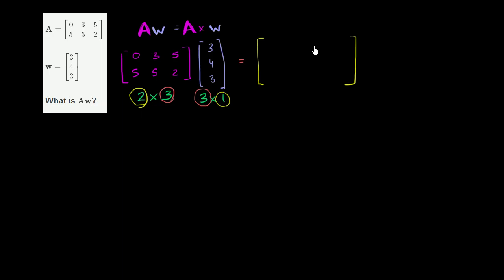So the top entry right over here, we're going to get the row information from our first matrix. And then the column information - there's only one column here. But we're going to get that from this matrix, or this vector, whatever you want to call it. So we're going to have 0 times 3 plus 3 times 4 plus 5 times 3.